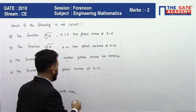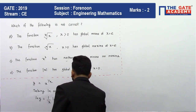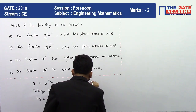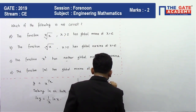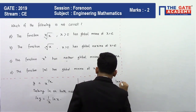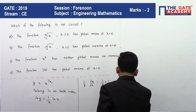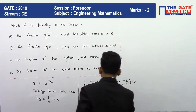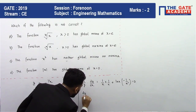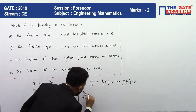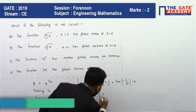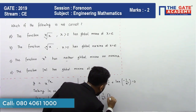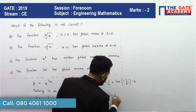Differentiating both sides: (1/y) · (dy/dx) = (1/x)(1/x) + ln x · (−1/x²) = 0. Taking y to the other side: dy/dx = x^(1/x) · (1/x²)(1 − ln x).